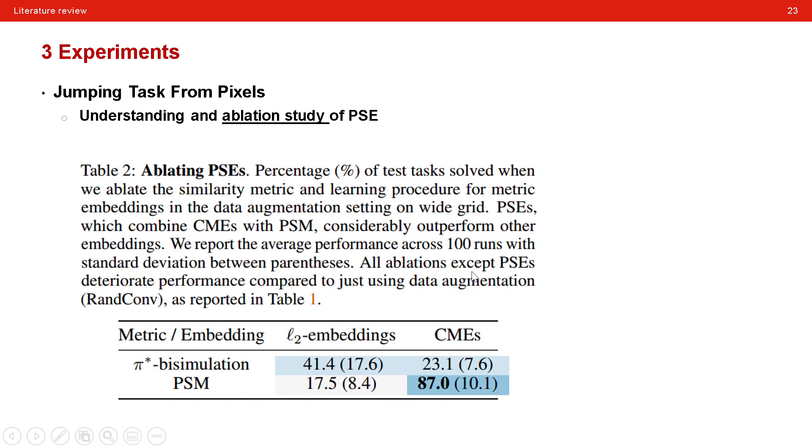And they further conduct ablation study for the model. And what they consider is the metric they use and the loss function in the contrastive loss. Here, the column indicates the different similarity metrics. And the row indicates the different loss functions to conduct the contrastive loss. And again, these two methods both are beneficial to improve the generalization in the test task.